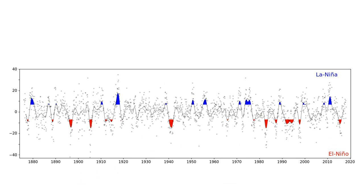This graph shows oscillating periods between normal conditions, El Niño weather conditions, and La Niña weather conditions over long periods of time. It's not completely predictable — there may be periods with multiple El Niños without intervening La Niña periods — but those are cycles that occur over time.